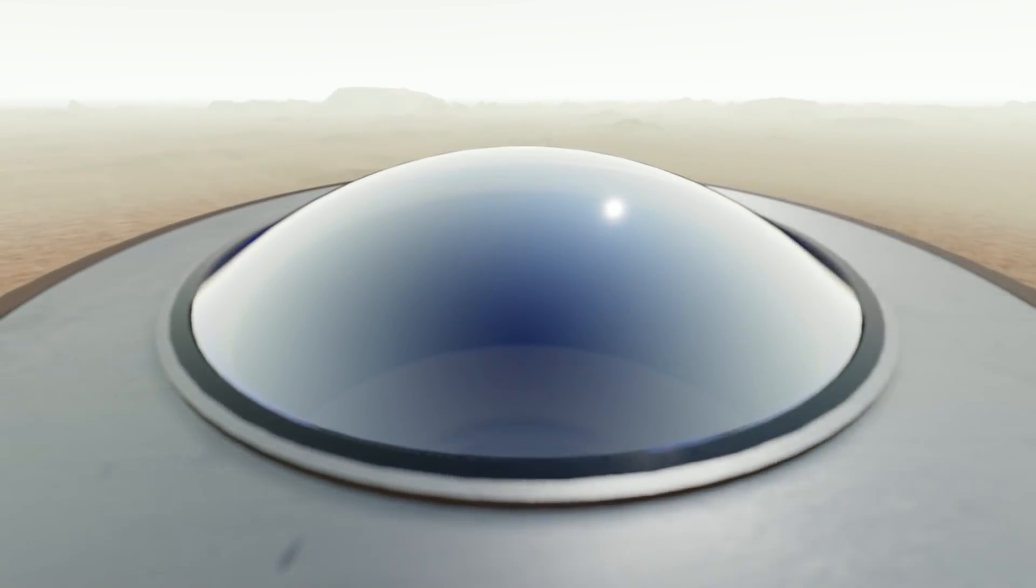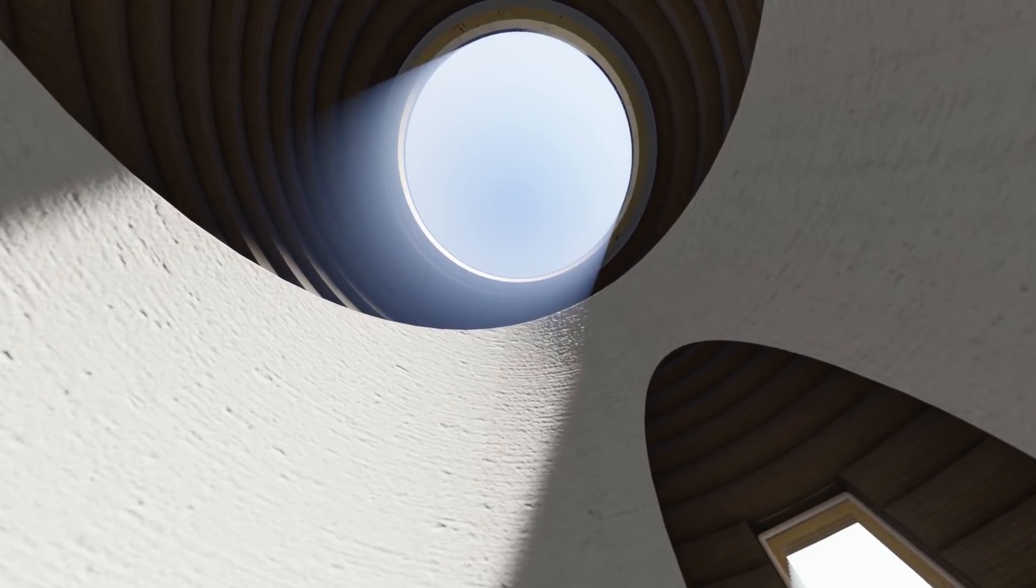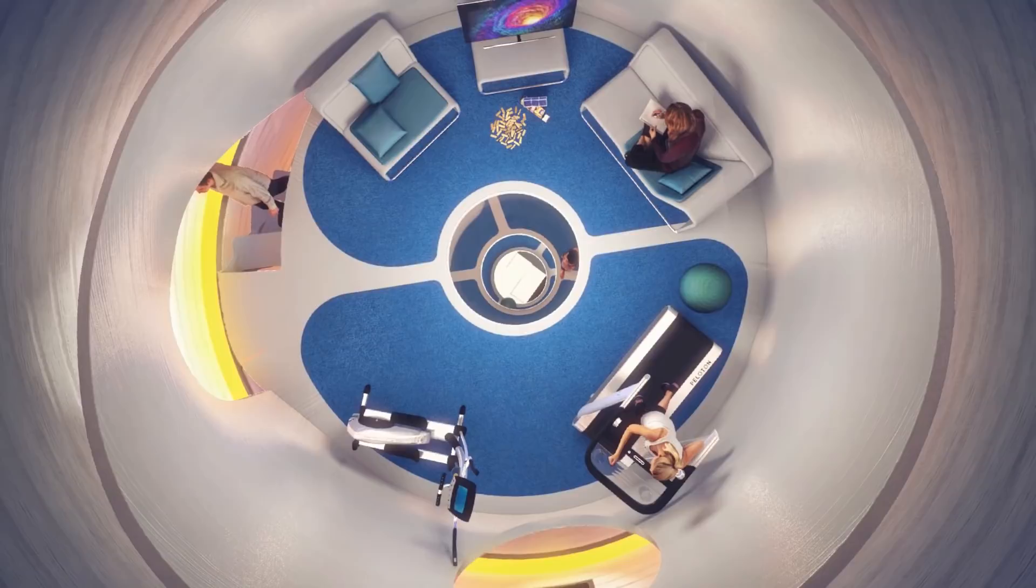The skylight is mounted atop the finished print and secured using sealant and linear motorized clamps. The habitat is then pressurized in preparation for human occupants.